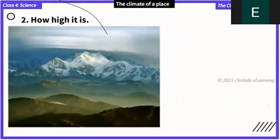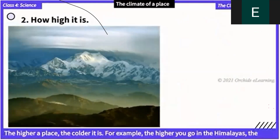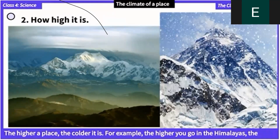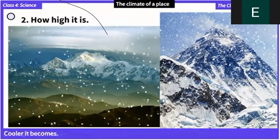Number two: how high a place is. The higher a place is, the colder it is. For example, the higher you go in the Himalayas, the cooler it becomes.